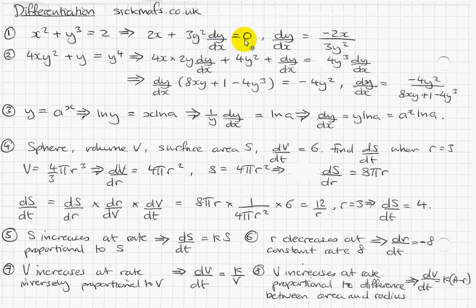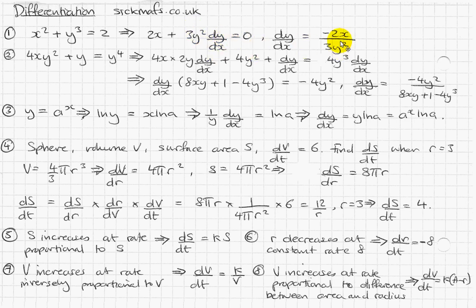Differentiating 2 becomes 0, and the whole point of this is to work out what dy/dx is. So you just rearrange — stick that 2x to the other side, you get 3y squared · dy/dx equals minus 2x. Then take the 3y squared underneath and you get minus 2x over 3y squared equals dy/dx. And that's done.